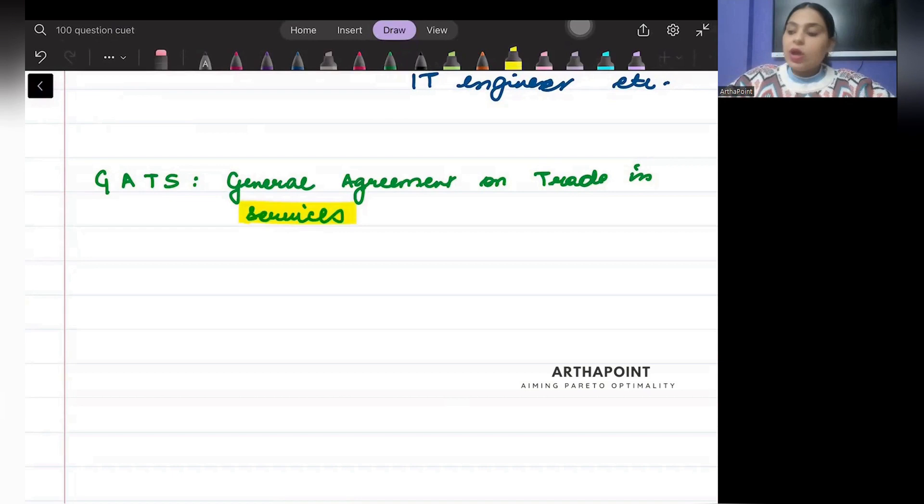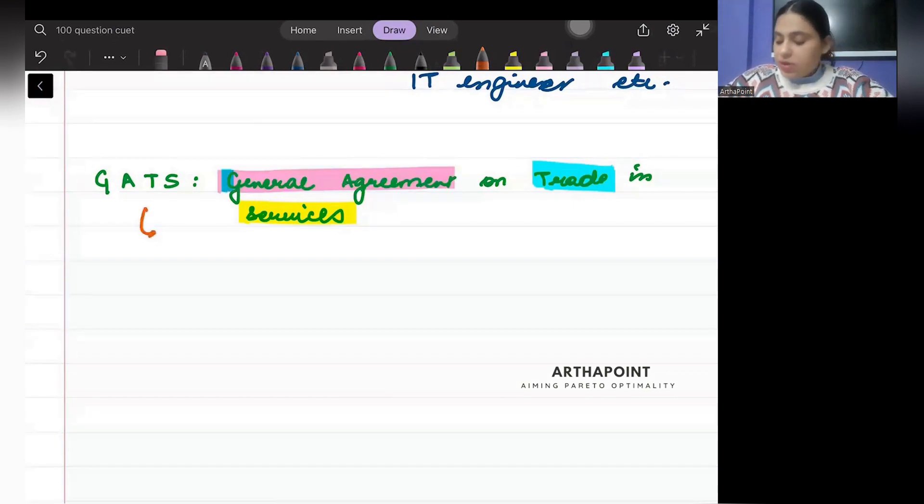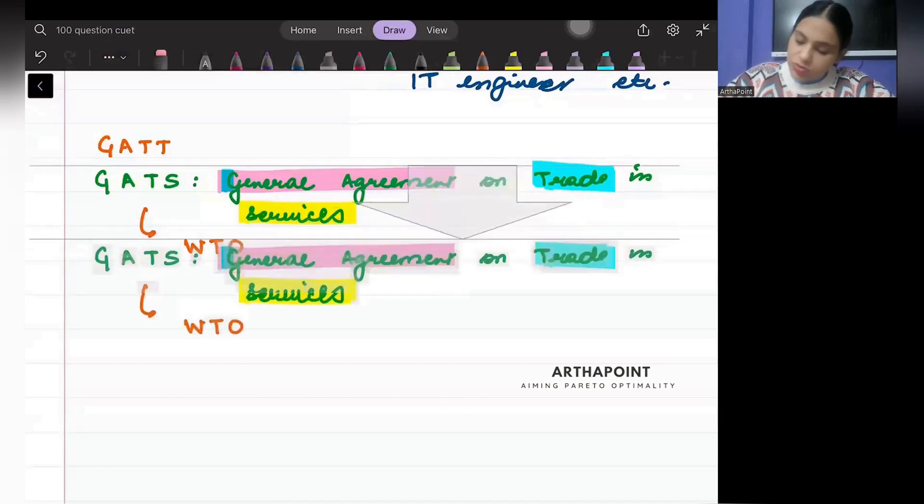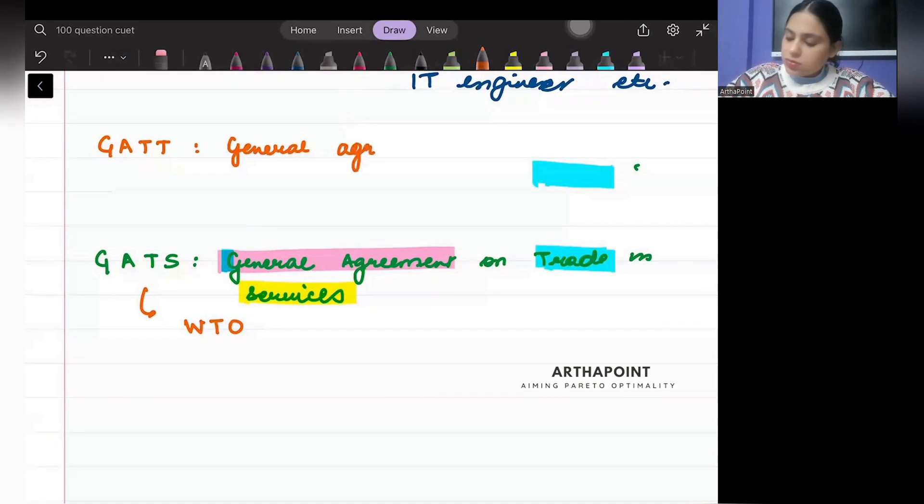Whatever services are provided, like BPO service, for example, if I provide my services to the U.S. sitting in India, which is a service which is tradable. So that means the General Agreement on Tariff and Trade.